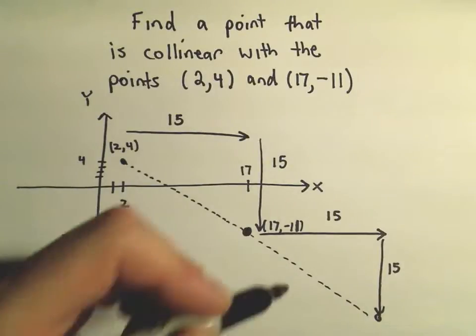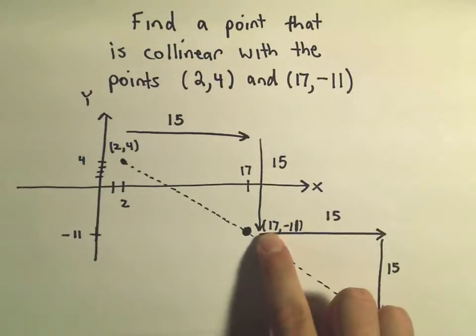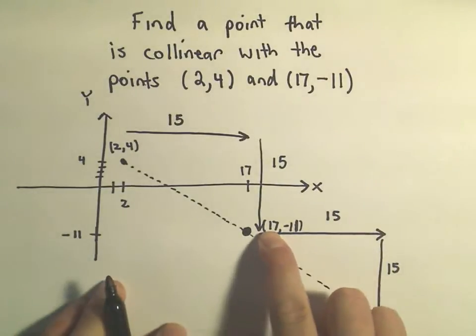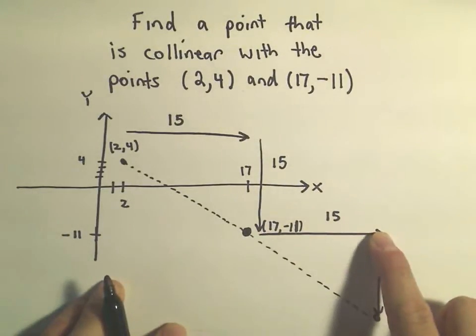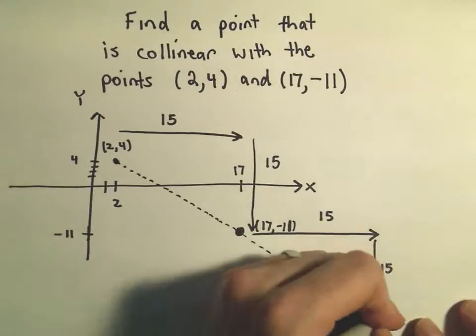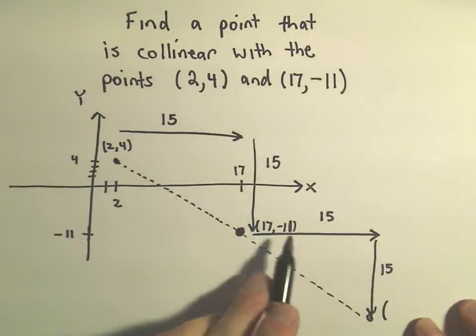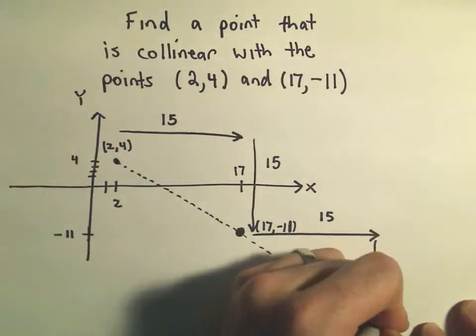Since we were at the x-coordinate of 17, if I move 15 units to the right, the new x-coordinate would be 17 plus 15, which is 32.